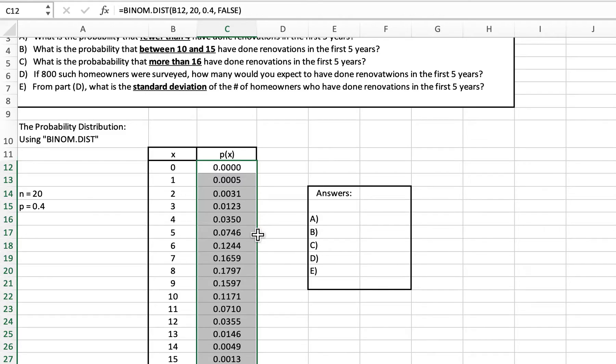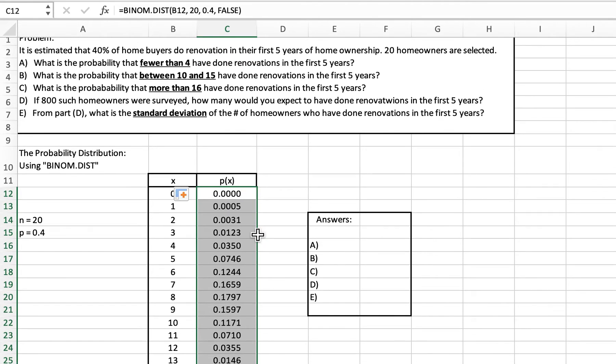That's how we can answer at least the first three questions. What is the probability that fewer than four have done renovations in the first five years? That means that we have zero through three. Fewer than four means I don't include four, so we're looking at those four probabilities added together.